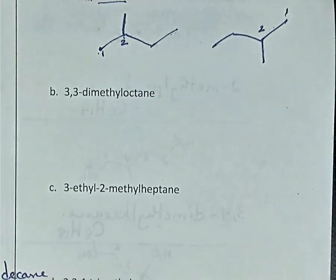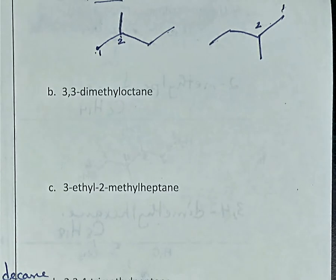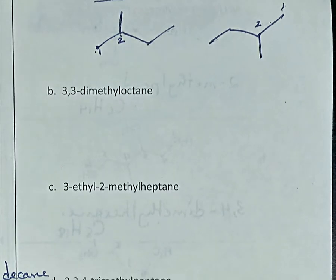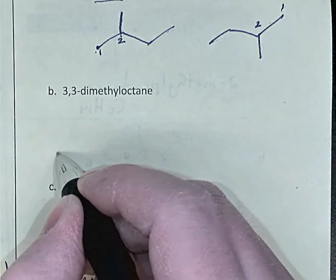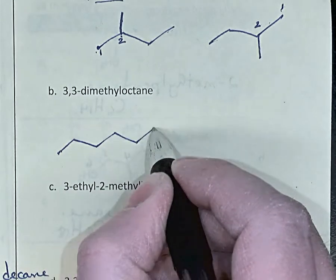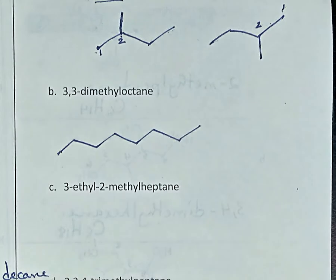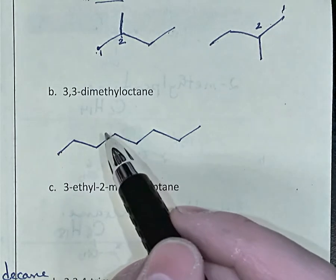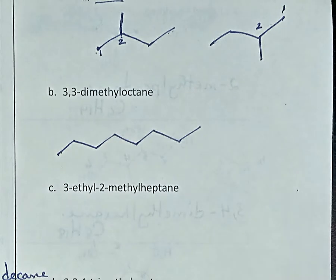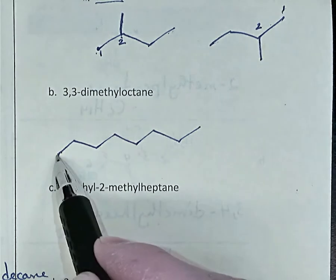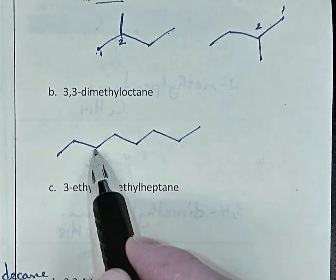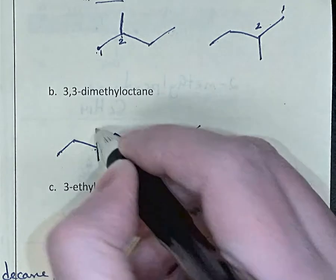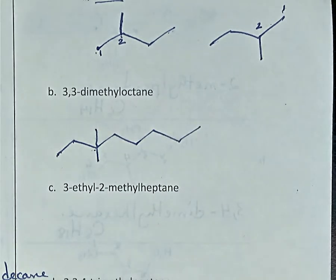The next one is 3,3-dimethyloctane. The parent chain is octane — it's got eight carbons: 1, 2, 3, 4, 5, 6, 7, 8. 3,3-dimethyl — methyl is a one-carbon branch, dimethyl means there are two of them, and 3,3 means they're both on the third carbon. So carbon-1, carbon-2, carbon-3 — this third carbon has two methyl branches on it.